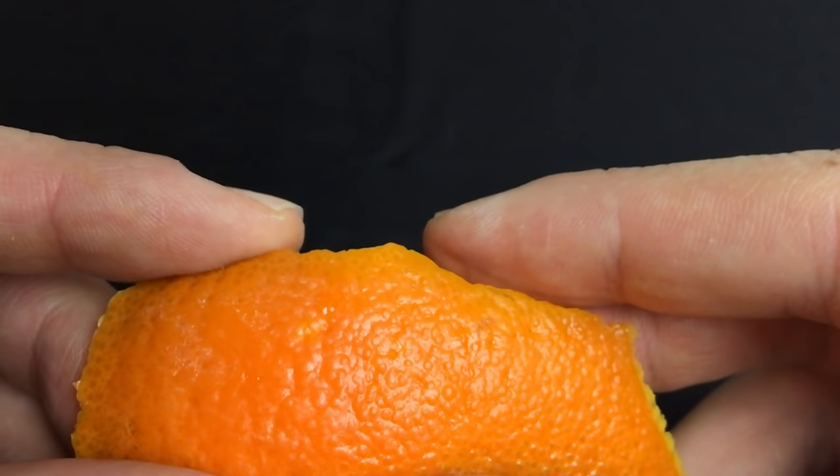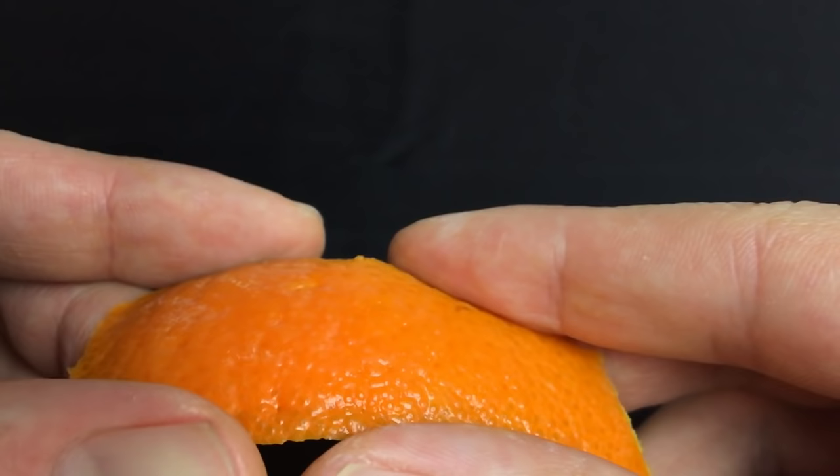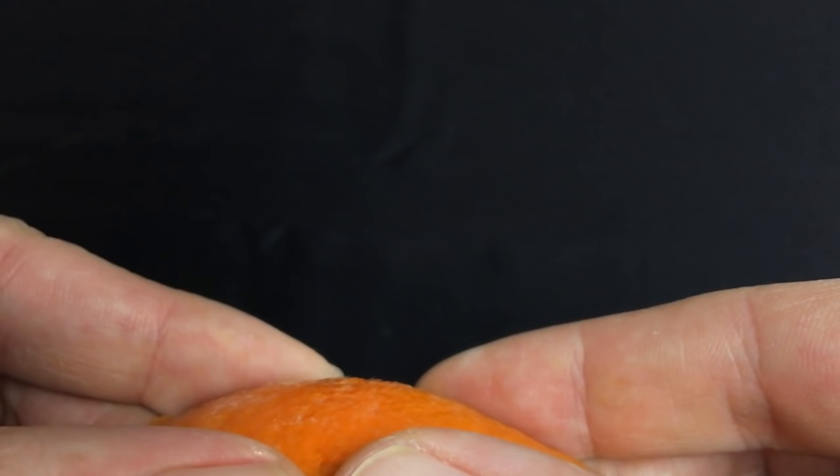So today we're going to learn how to flame a citrus peel, which is a fun and easy bar trick that always gets people's attention. But to understand why this even works, let's start by taking a close look at an orange peel.